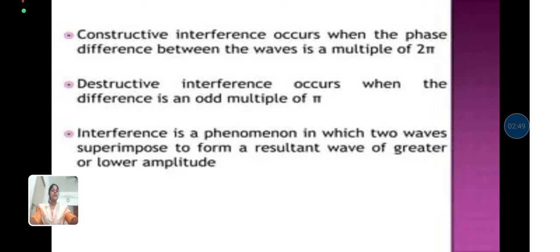Constructive interference occurs when the phase difference between the waves is a multiple of 2π. Destructive interference occurs when the difference is an odd multiple of π.